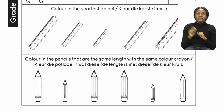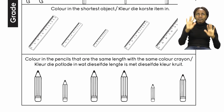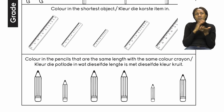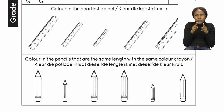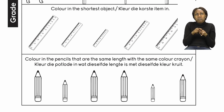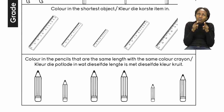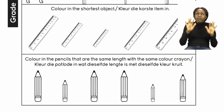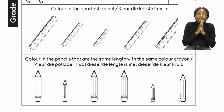It's asking you to colour in the shortest object. Short in this case can also mean small, so you need to find the one that is the shortest. There are some that look like they are the same size, but we are not interested in those — we want to colour the shortest. First look for the shortest one and then colour it neatly. Please try to stay inside the lines.